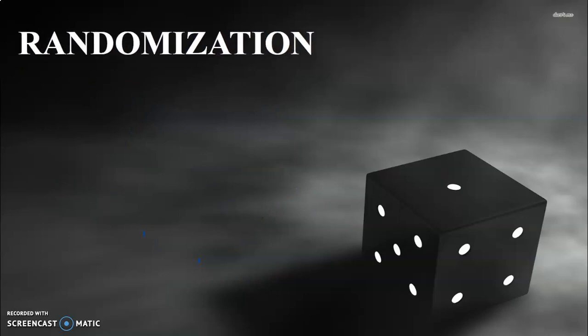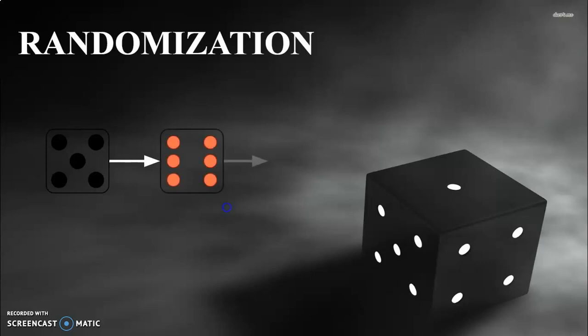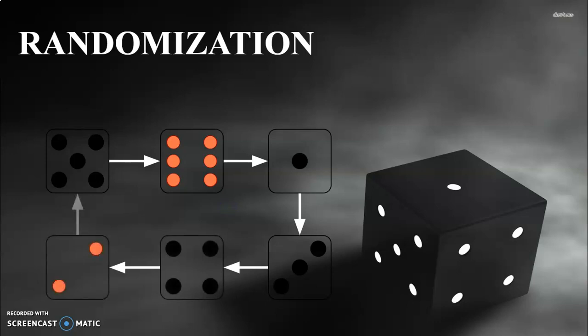Finally, let's discuss the last concept — randomization — which is of utmost importance in games like Ludo. Suppose the dice you throw has a fixed sequence: 5, 6, 1, 3, 4, 2. The game would become biased — one person may get all the big numbers or play tokens strategically knowing what comes next. To prevent this, numbers must appear in random order, making the game unbiased and interesting throughout. This is the main idea behind the randomization concept.